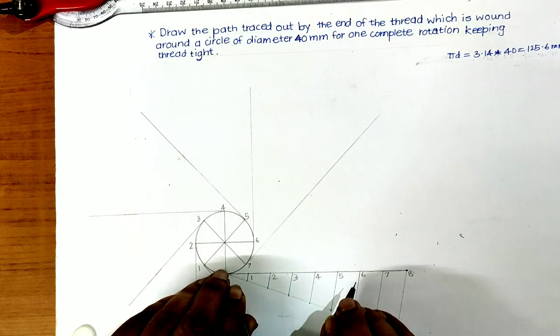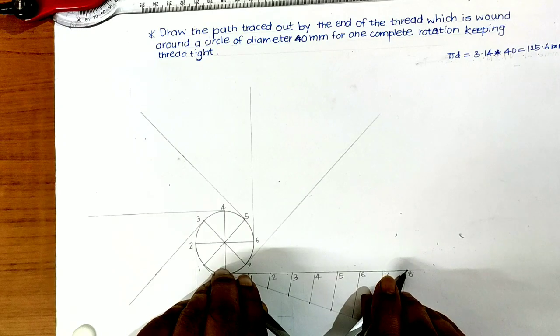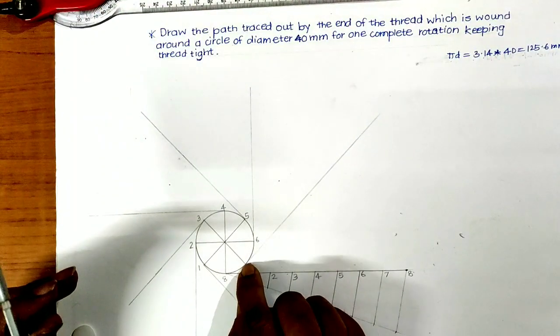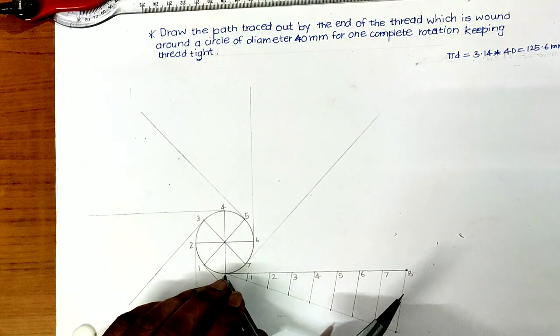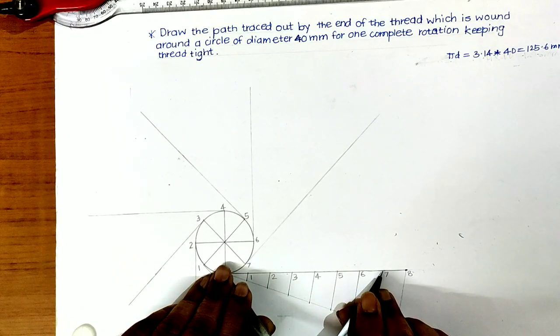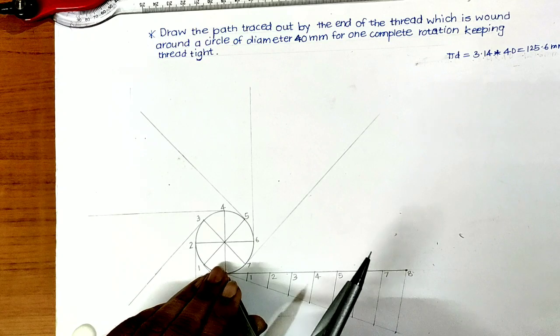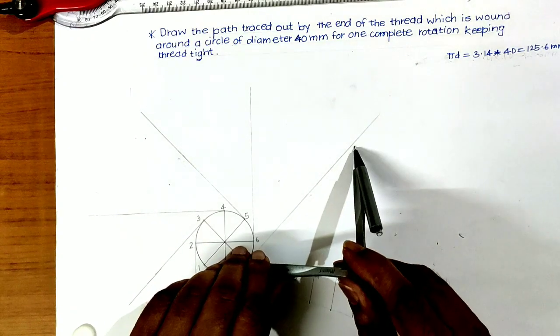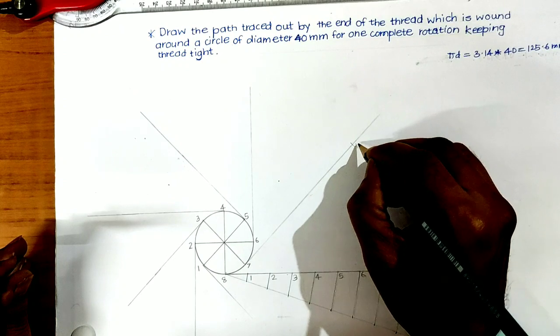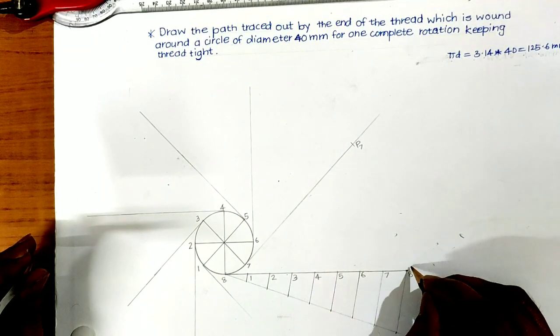Initially the free length is full length that is equal to circumference. But during first 45 degree rotation, this much length, that is one eighth of the circumference, will be reduced. That's why reduce one segment of this and take that much distance in compass. Taking 7 as center, cut tangent at 7. This will give the P7th point. This is P8th position.